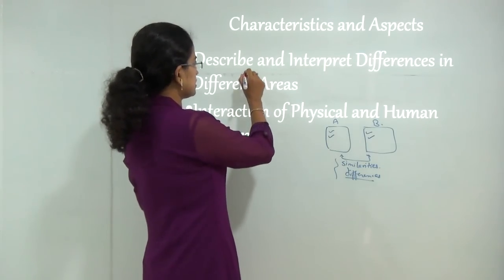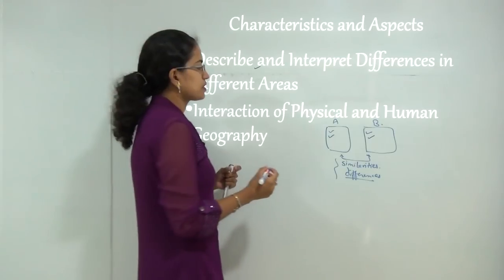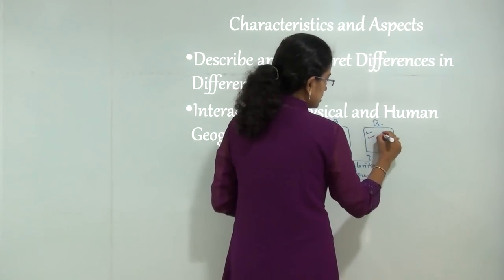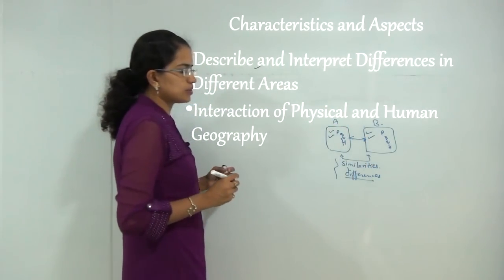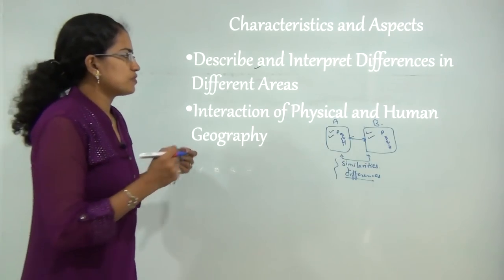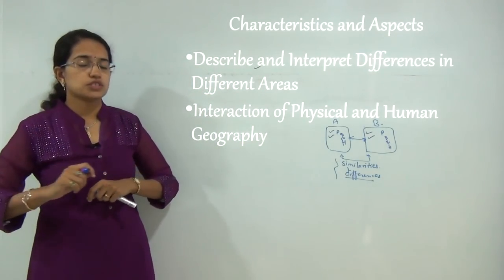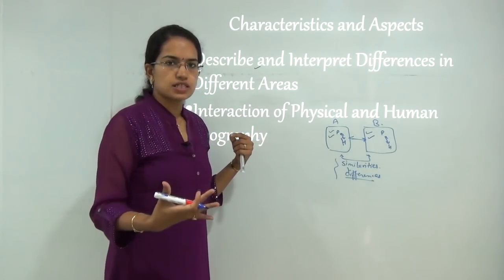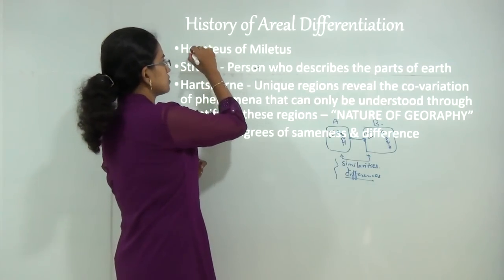The main aim was to describe and interpret the differences in the different areas, and finally the interaction of the various physical and human characteristics within the region and across the region. Most people say the first one to propound the concept of aerial differentiation was Richard Hartshorne, but the concept has been a kind of historical concept which started with Hecataeus of Miletus, who tried to explain the differences in the various areas.